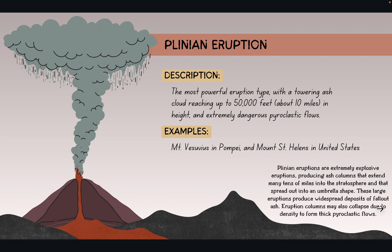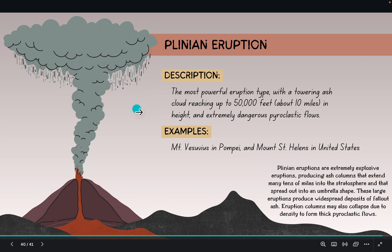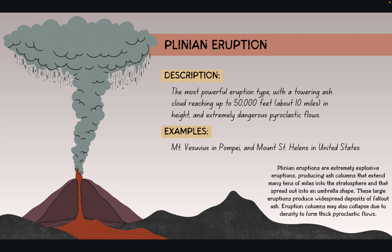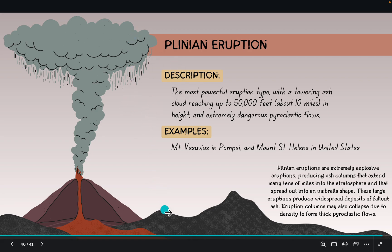To talk more about types of eruptions: the Plinian eruption is the most powerful type, with a towering ash cloud reaching up to 50,000 feet — about 10 miles in height — and extremely dangerous pyroclastic flows. Examples are Mount Vesuvius in Pompeii and Mount St. Helens in the United States. Plinian eruptions are extremely explosive, producing ash columns that extend many tens of miles into the stratosphere and spread out into an umbrella shape. These large eruptions produce widespread deposits of fallout ash — really, really dangerous.